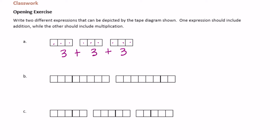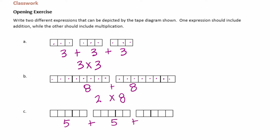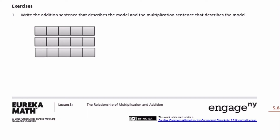If we wanted to write it as a multiplication expression, we have three groups of three, so three times three. For part B, we have eight plus eight — two groups of eight — which would be two times eight. For the last one, we have five plus five plus five, which is three groups of five, so three times five.